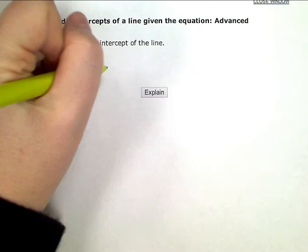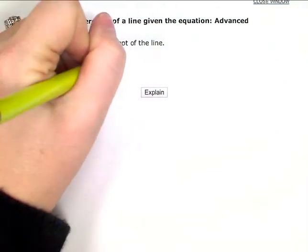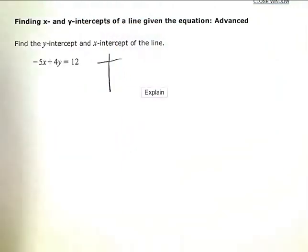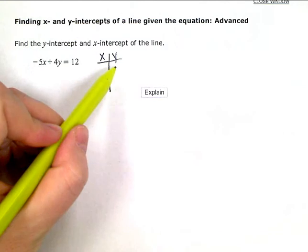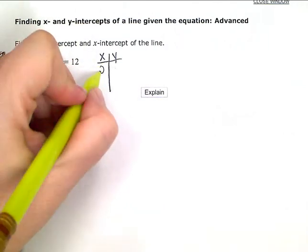So, we're going to use the fact that intercepts always have one coordinate of zero. If I'm looking for the y-intercept, my x value is always zero.